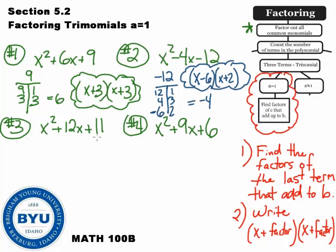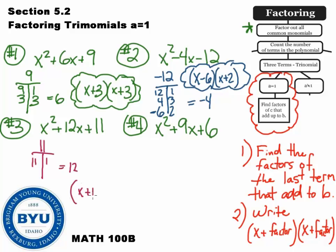Next problem: factors of 11 that add to 12. Factors of 11 — not much goes into 11. The only one I can think of is 11 and 1. And believe it or not, 11 plus 1 equals 12. So that would be our factors: x plus 11 and x plus 1.